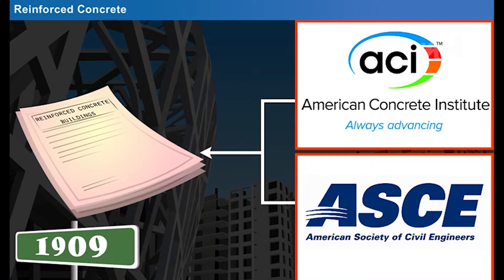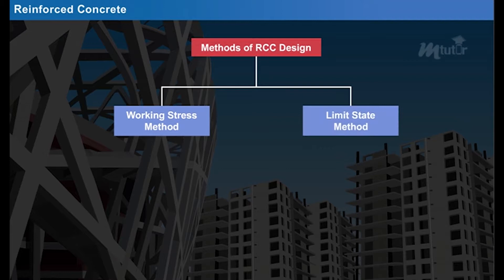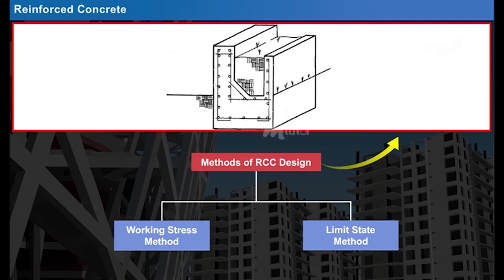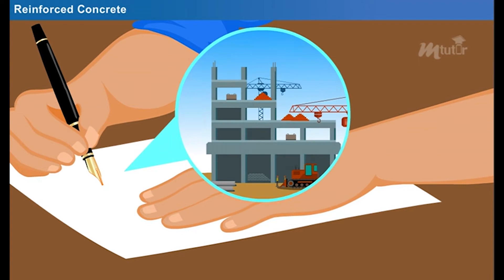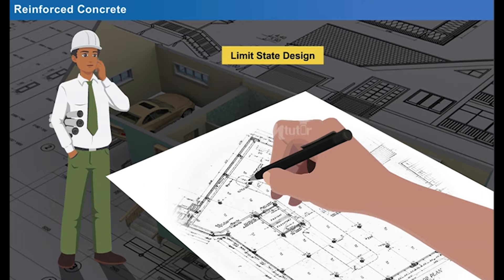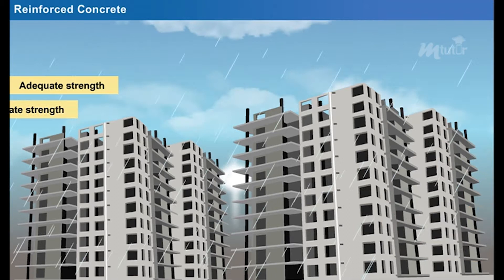At present, we are using IS 456-2000 to design reinforced concrete structures. Working stress and limit state methods of design are the most commonly used methods for designing reinforced concrete. Earlier, the working stress method was used. However, due to a few discrepancies in calculating ultimate load and stresses, limit state design was developed to overcome the associated disadvantages. The main objective of reinforced concrete structural design is to provide adequate strength, durability, serviceability, and resistance to acid and corrosion attack.